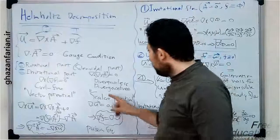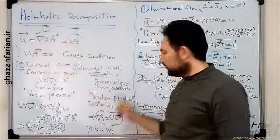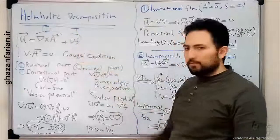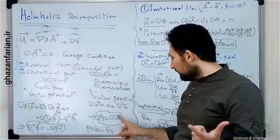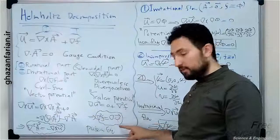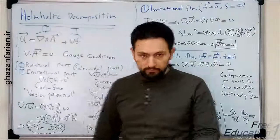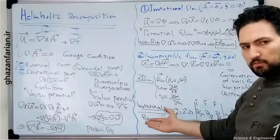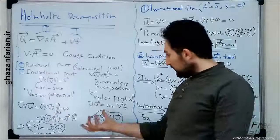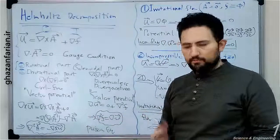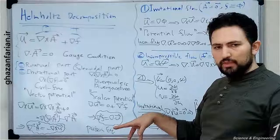Similarly, taking the divergence of both sides, the divergence of u equals zero — since the divergence of the curl of anything is zero — plus the divergence of the gradient of f, which is the Laplacian of f. So the Laplacian of f equals the divergence of u. These two equations — the Laplacian of f equals the divergence of u, and the Laplacian of A equals minus the curl of u — are called the Poisson equations. When the Laplacian of something equals a non-zero quantity, these are Poisson-type equations. If the right-hand side of both equations is zero, they reduce to the Laplace equation.